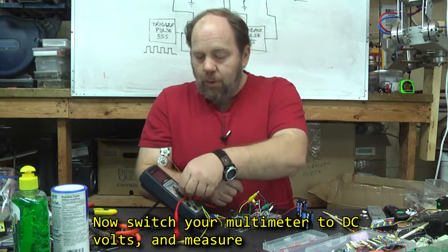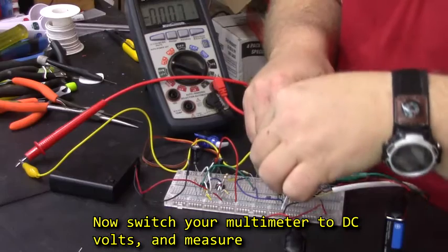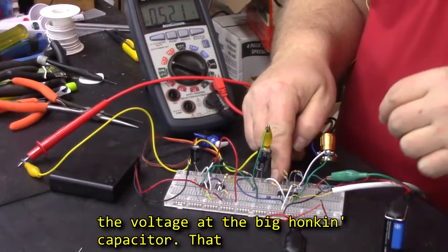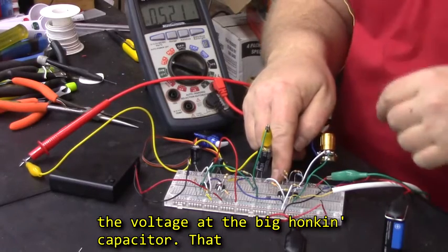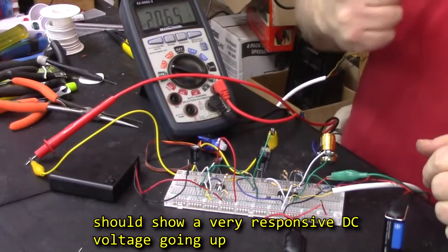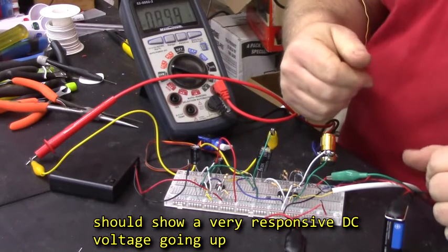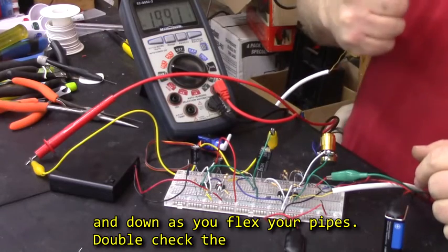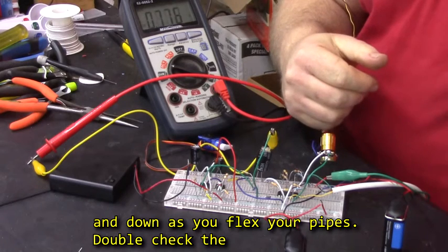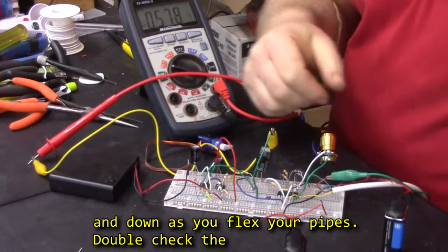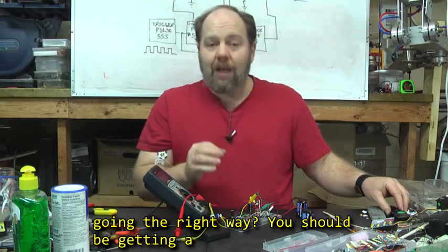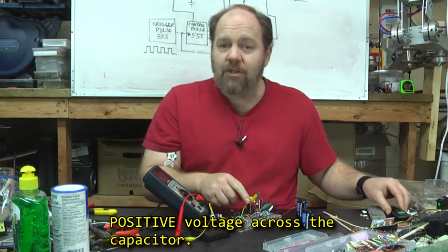Now switch your multimeter to DC volts, and measure the voltage at the big honkin capacitor. That should show a very responsive voltage going up and down as you flex your pipes. Double check the polarity of your diode. Do you have the diode going the right way? You should be getting a positive voltage across the capacitor.